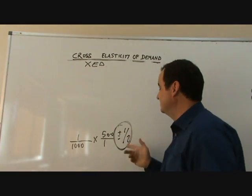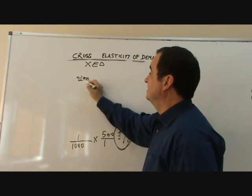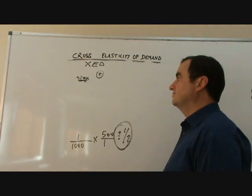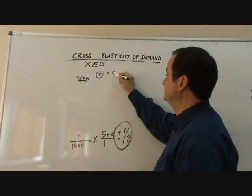So we've got this, plus a half. Sign, is it plus, is it minus? We know that a plus value on cross elasticity of demand denotes that these goods are substitutes.